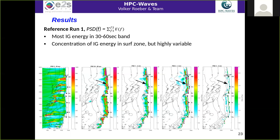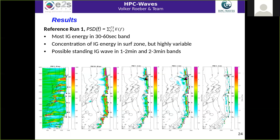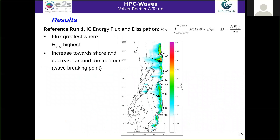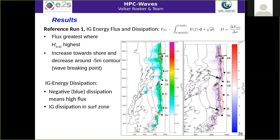It's also possible that a standing wave has occurred in the 1-to-2 and 2-to-3 minute band. When we look at energy flux and dissipation — dissipation being the horizontal spatial gradient of the energy flux — we can see the flux is greatest where infragravity significant wave heights are highest. There's an increase towards the shore due to shoaling of the group waves, and a decrease around the 5-meter contour from the breakpoint onward. The dissipation is not always gradual; in some areas it is more abrupt, and this depends mostly on the breaking intensity of the local bathymetry.